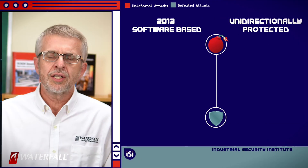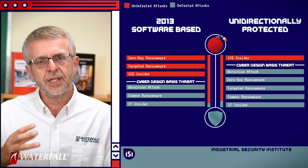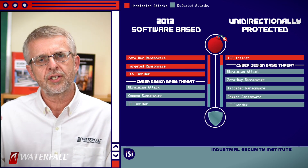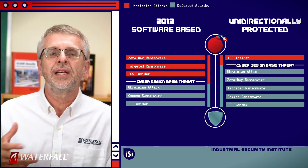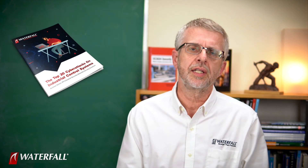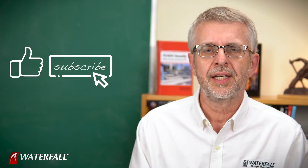Looking at our scorecard, we do see an advantage for the unidirectionally protected security program at this point, but it's not a big advantage — let's see how that develops over time. A reminder that this whole series of videos is based on a white paper with the same name, 'Top 20 Cyberattacks on Industrial Control Systems,' available on the Waterfall website. Download it if you're interested. Give us a like and subscribe — thanks.